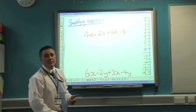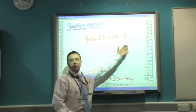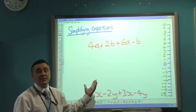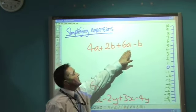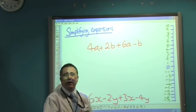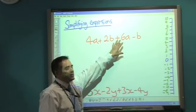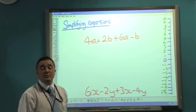Simplifying expressions. When you've got something like this, which is particularly a grade D question, 4a plus 2b plus 6a minus b, there's not a great deal of messing about or any sort of spectacular strategy we need for something like that.